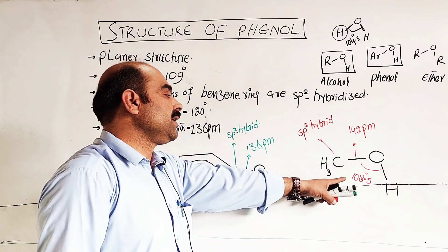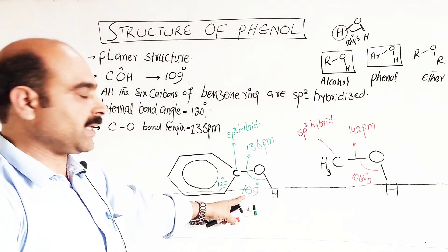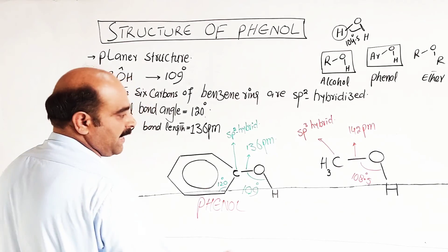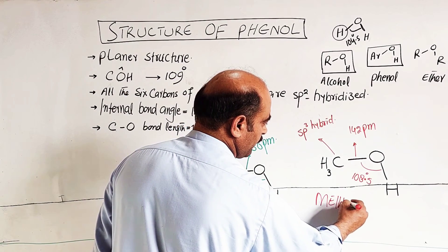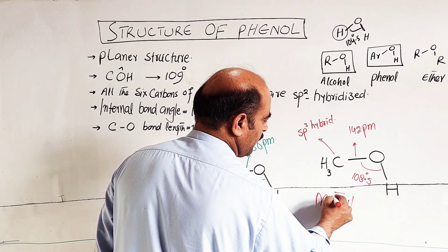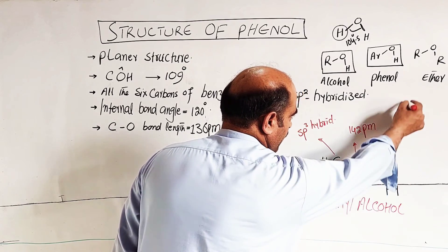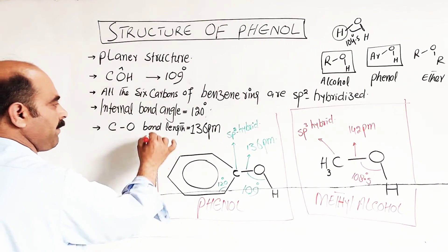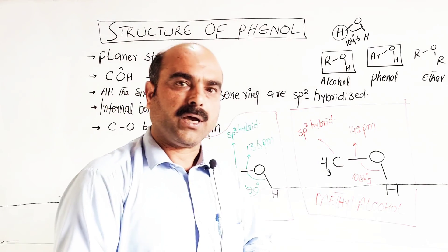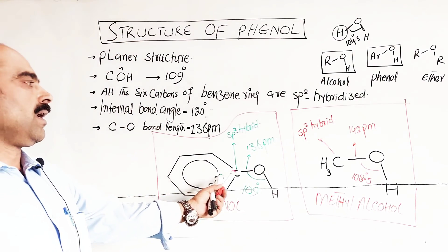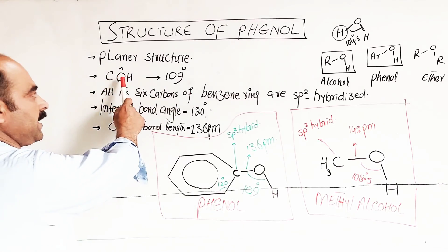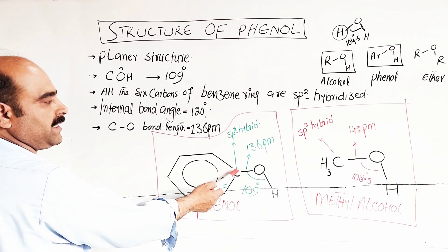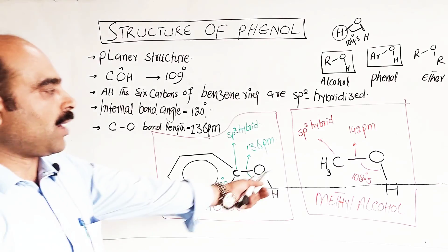The angle is approximately 108 to 109 degrees, close to the tetrahedral angle of 109 degrees — very close to the tetrahedral angle. These were all about the structure of phenol. This is phenol, and this is methyl alcohol, showing the structure of methyl alcohol and the structure of phenol for comparison.